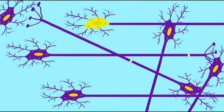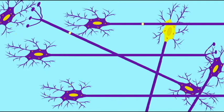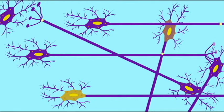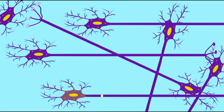How can cells conduct electricity? Well, this ability to be excitable rests on the proteins found in the cell membrane of the axon, known as the axolema. These proteins allow for the pumping of ions — charged particles.